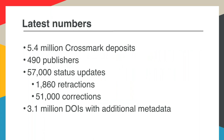Just to give you some numbers: 5.4 million DOIs are Crossmark-enabled and have Crossmark metadata, coming from 490 of our publisher members. Of those 5.5 million, 57,000 have some kind of a status update — the majority are corrections, but we're getting close to 2,000 registered retractions in our database. Over half of those 5.5 million DOIs have some additional metadata in the more information box that gives readers extra background and context on what they're reading.